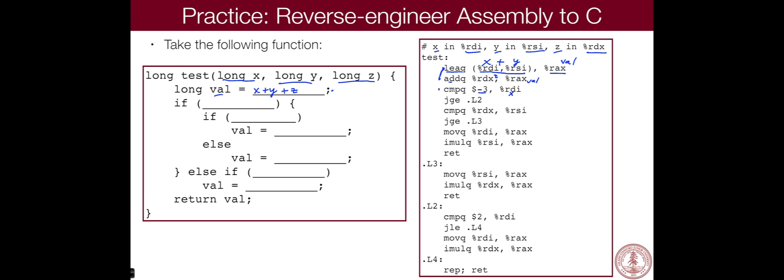And remember what this does. This subtracts negative three from RDI. So it's going to be RDI minus negative three. And then it sets some condition codes.